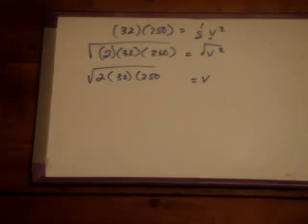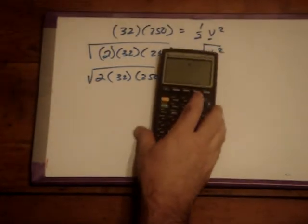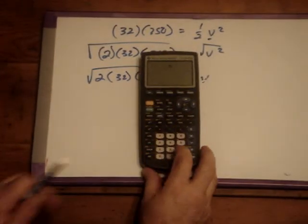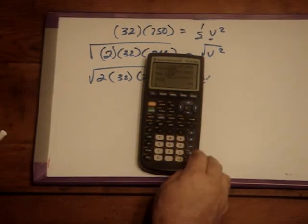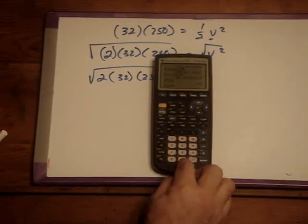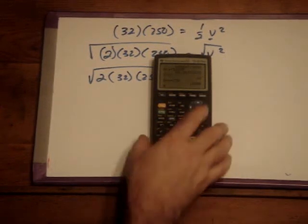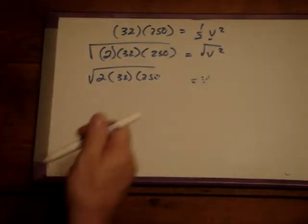So, what is that? I don't know, but I can find out here. I'm going to turn this on. 2 times 32 is of course 64, times 250, the height of the hill. So, that's 16,000 on that side. And then, let's go ahead and take the square root.